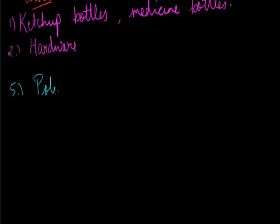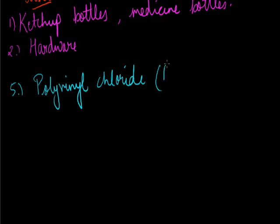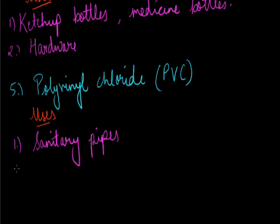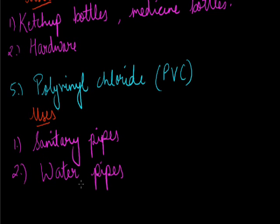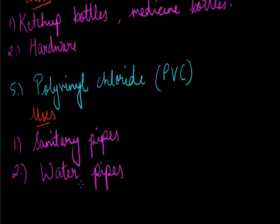The next plastic is PVC — polyvinyl chloride. PVC is used for making sanitary pipes, water pipes for carrying large amounts of water over long distances, and simple rods.